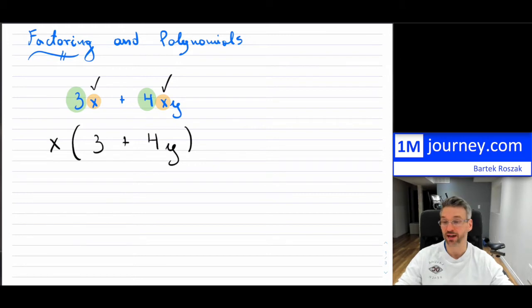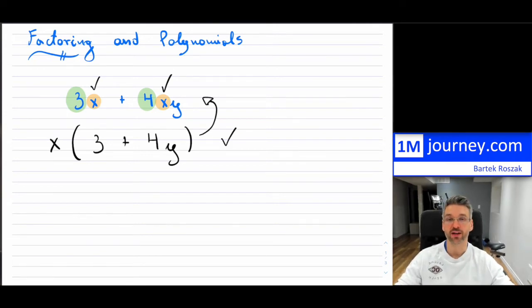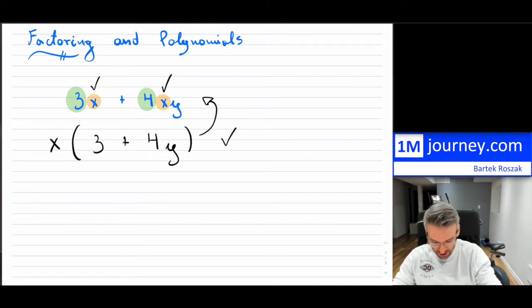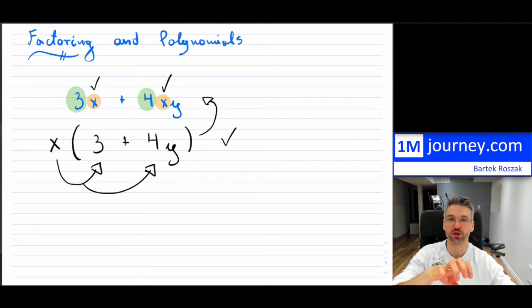So for this example, x is the common factor between the two terms, and it turns out to be the greatest common factor — the only thing I can really take out that they share. I cannot take out a 3, I cannot take out any number, I cannot take out the y because the first term doesn't have a y. This is the factored form — these are equivalent to each other, and you can check that by using the distributive property to distribute the x across both terms, and you will get 3x plus 4xy back. Hopefully this gives you a sense of what factoring means: you take a factor that is common and extract it from the expression.